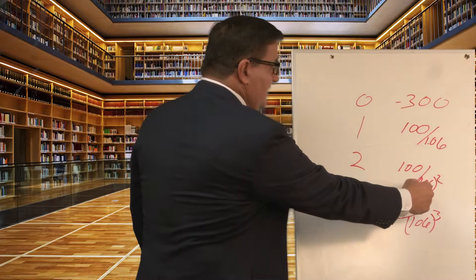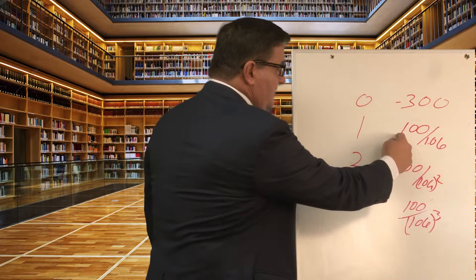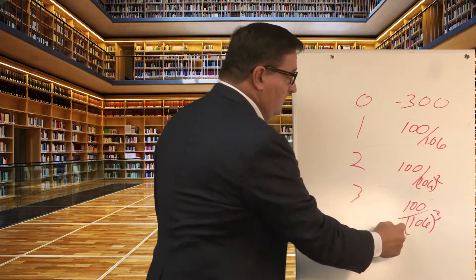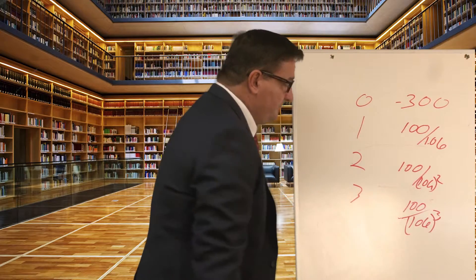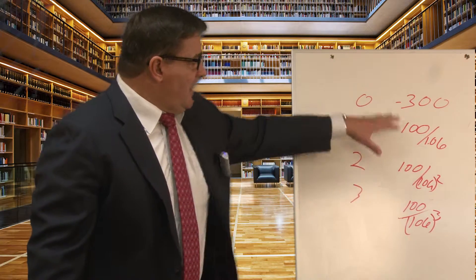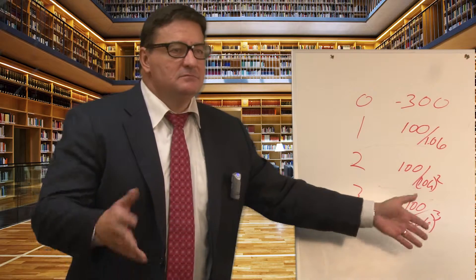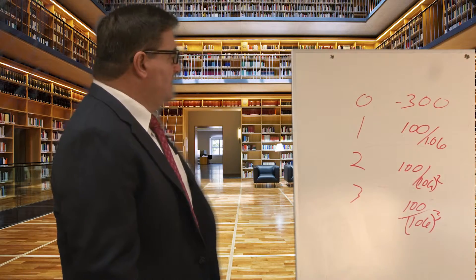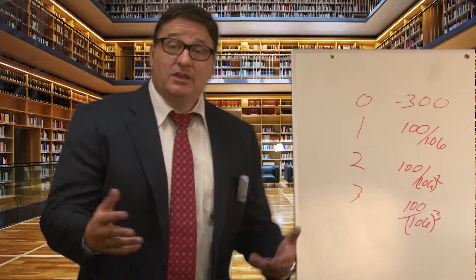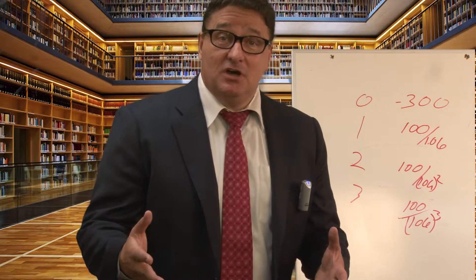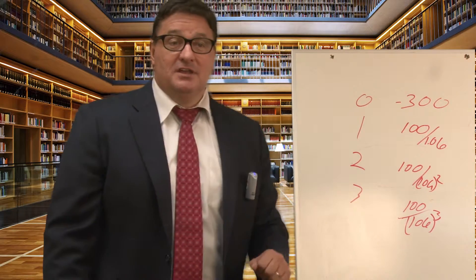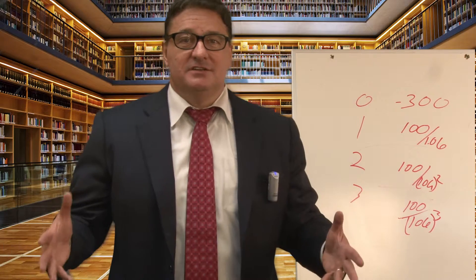All I'm doing is dividing it by 106 for year one, 106 to the second power, 106 cubed. And when I add this up, I get like 250 million dollars. So what you should probably pay for this cash flow is 250 million. You shouldn't pay 300 million. And that's all valuation is.